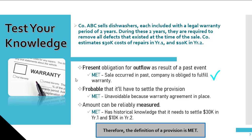The present obligation for outflow of cash as a result of a past event is met, as a sale has occurred in the past and the company is obligated to fulfill the warranty. Whether it's probable that it'll have to settle the provision is also met — this is unavoidable because the warranty agreement is in place. And if the amount can be reliably measured, this is also met as the company has historical knowledge that it needs to settle $30,000 in the first year and $10,000 in the second year. Because company ABC has an unavoidable obligation of an uncertain amount, this is a provision. Note that this is also a liability because a provision is a type of liability.